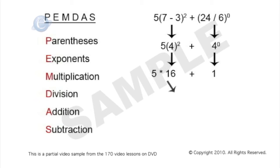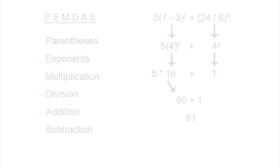Next step is multiplication and division. 5 times 16 is 80, so I end up with 80 plus 1. Last step is addition and subtraction. 80 plus 1 gives us 81.